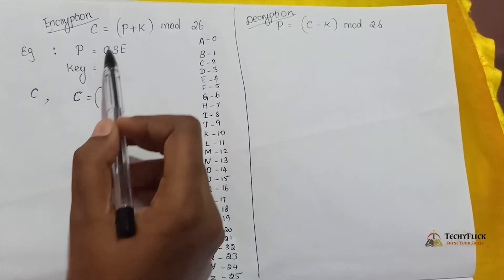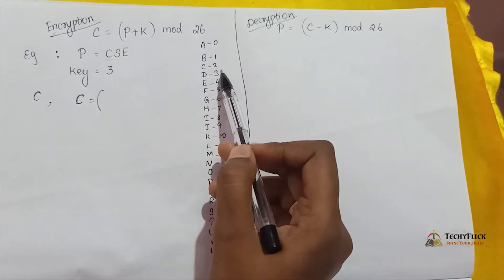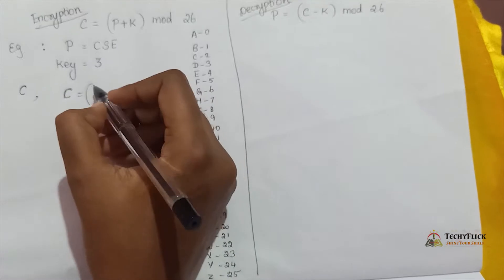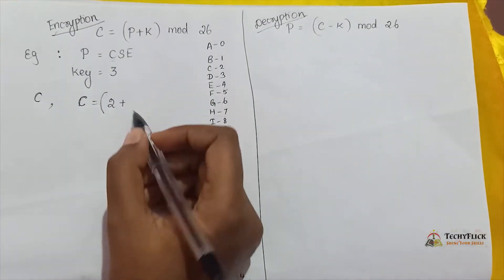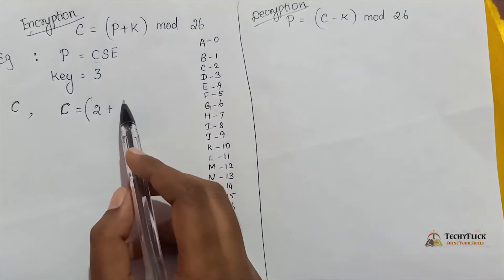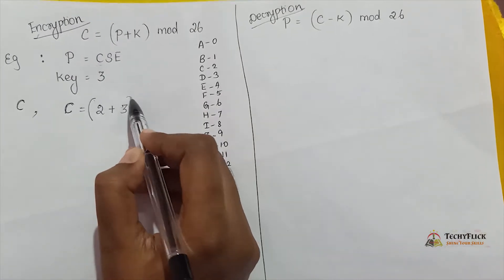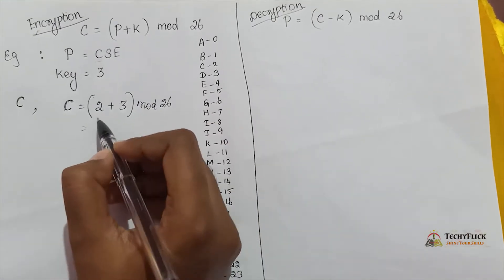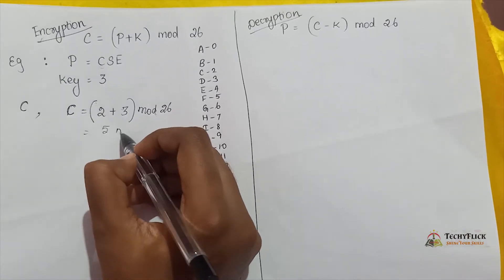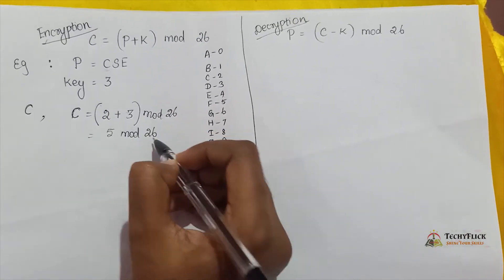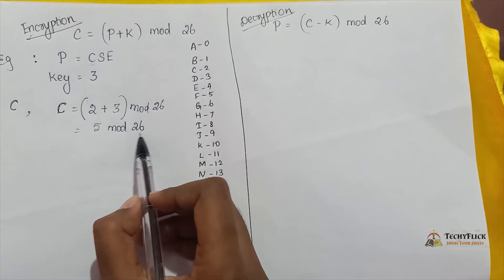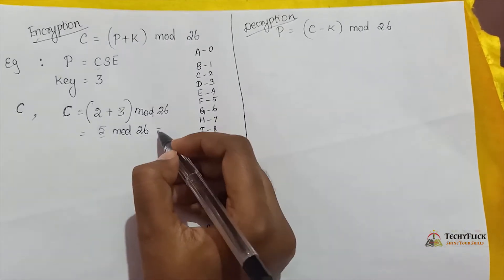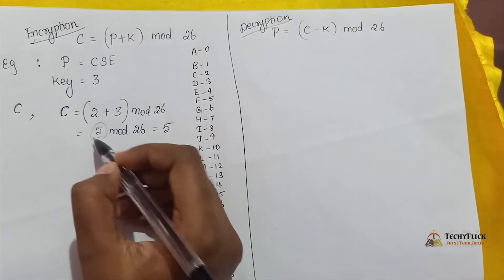That is your plaintext value. 2 plus K, K is your key value. Key value is 3, mod 26. So 2 plus 3 is 5, 5 mod 26. For the mod operation, when this value is a small value, the answer is the same. The answer is 5.